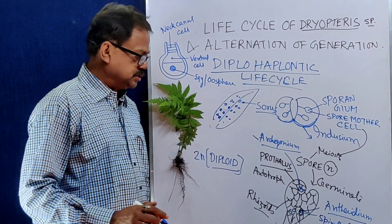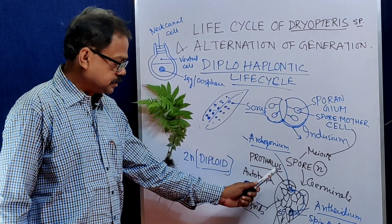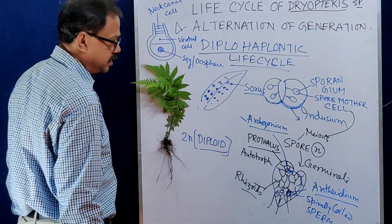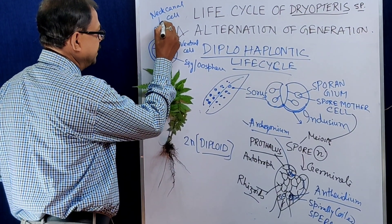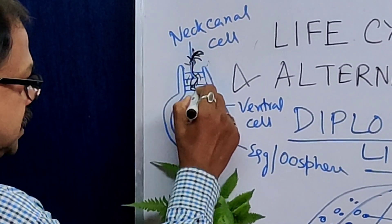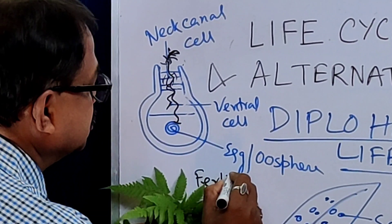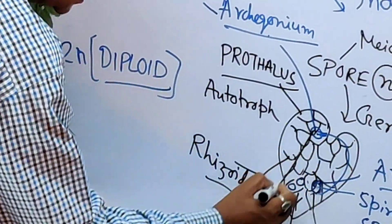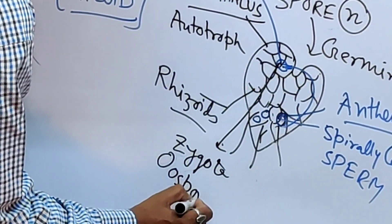When sperms are matured, they come to the archegonium with the help of water. This prothallus is monoecious because it contains both the female and male reproductive parts. The neck canal cell and ventral canal cell are destroyed, and the sperm slowly enters inside. At last, fertilization takes place, and a zygote or oosphere is produced — which is diploid.